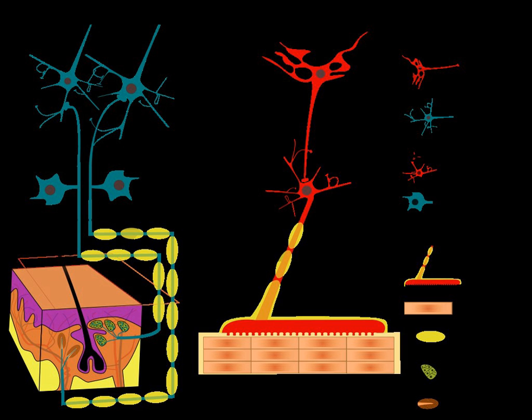Synergies have two defining characteristics in addition to being task-dependent: sharing and flexibility. Sharing requires that the execution of a particular motor task depends on the combined actions of all the components that make up the synergy. Often there are more components involved than are strictly needed for the task, but control is distributed across all components nonetheless. A simple demonstration comes from a two-finger force production task, where participants generate a fixed amount of force by pushing down on two force plates with two different fingers, combining the contributions of independent fingers. While the force produced by any single finger can vary, this variation is constrained by the action of the other such that the desired force is always generated.